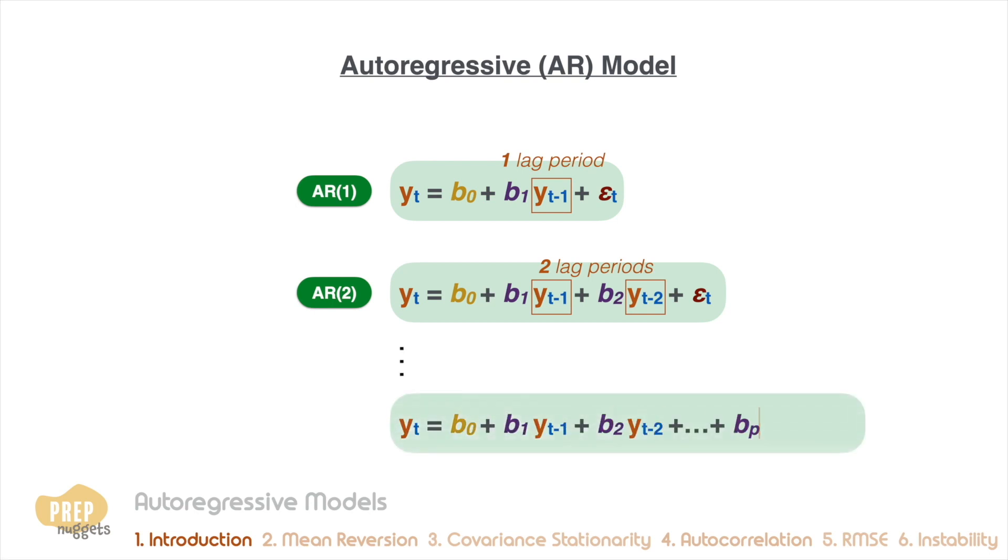In general, an AR model of order P is expressed as such, where P indicates the number of lagged values that the autoregressive model will include as independent variables.